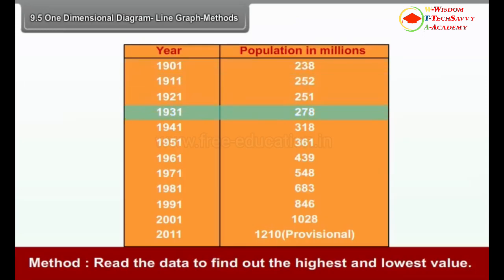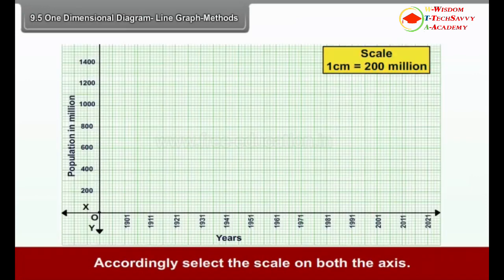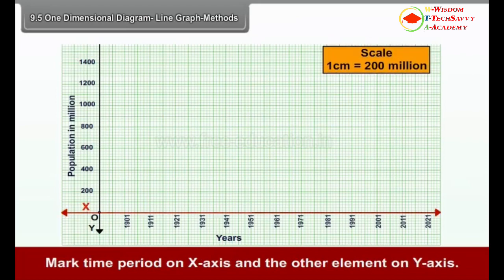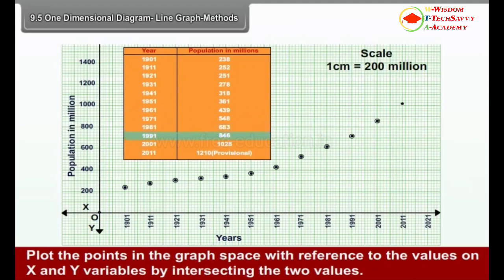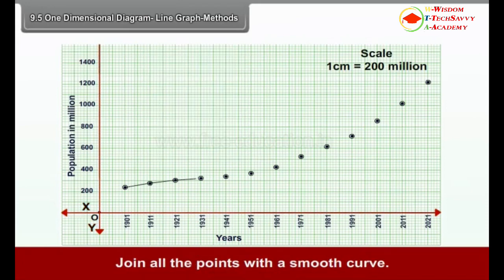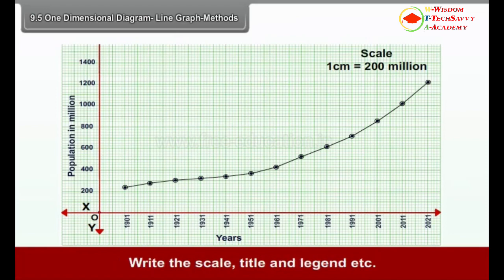Method for drawing a line graph: Read the data to find out the highest and lowest values. Accordingly, select the scale on both axes. Mark the time period on the x-axis and the other elements on the y-axis. Plot the points in the graph space with reference to the values on x and y variables by intersecting the two values. Join all the points with a smooth curve. Write the scale, title, legend, etc.